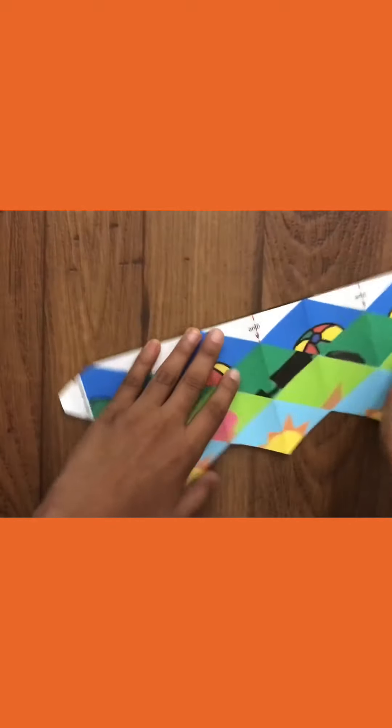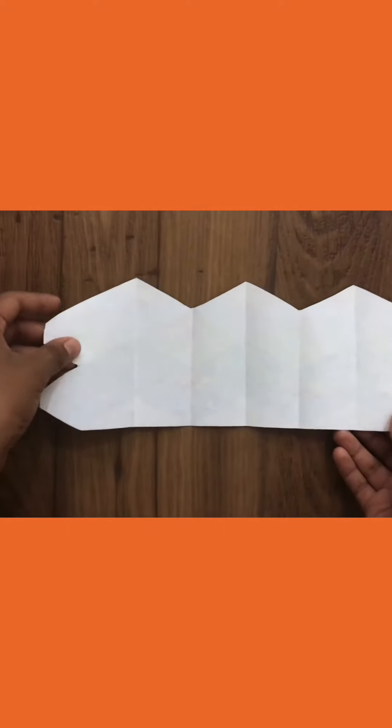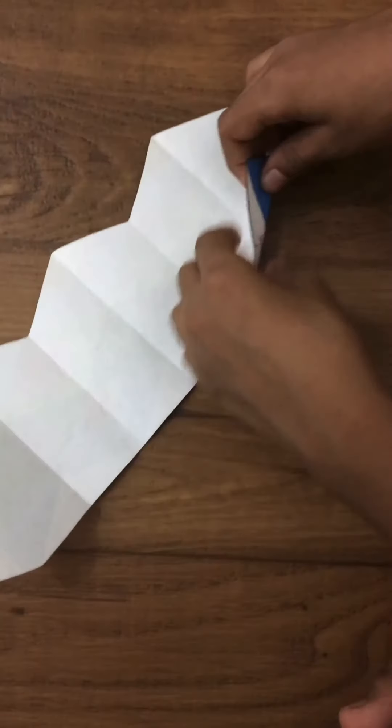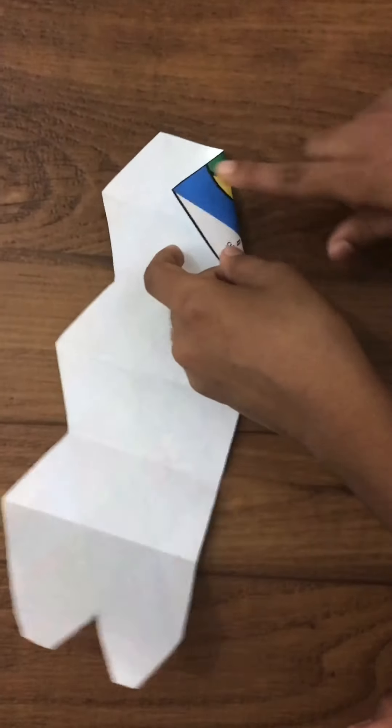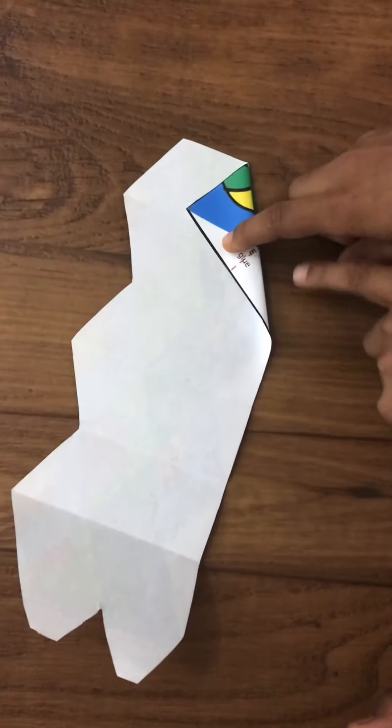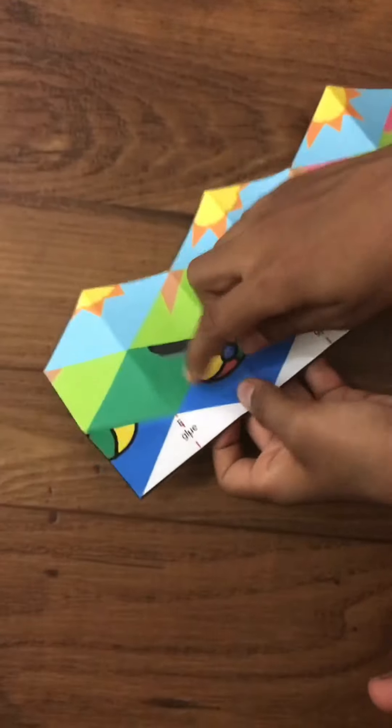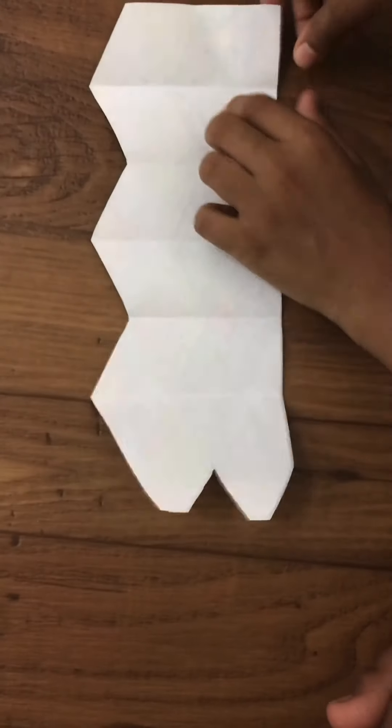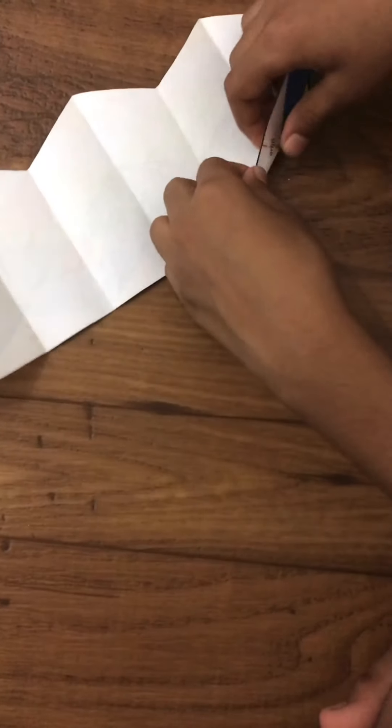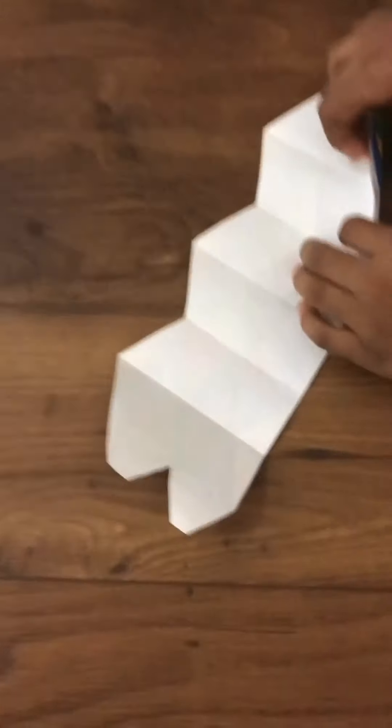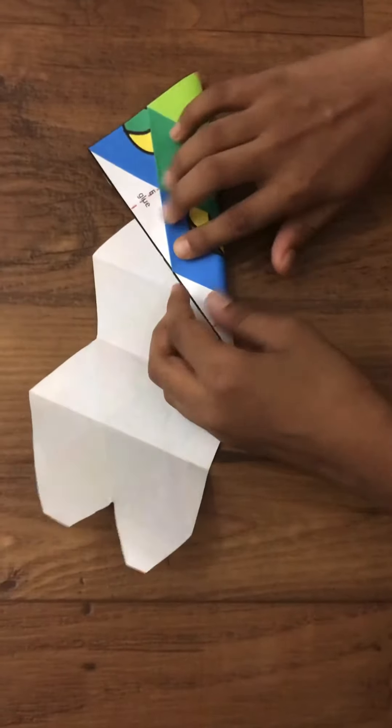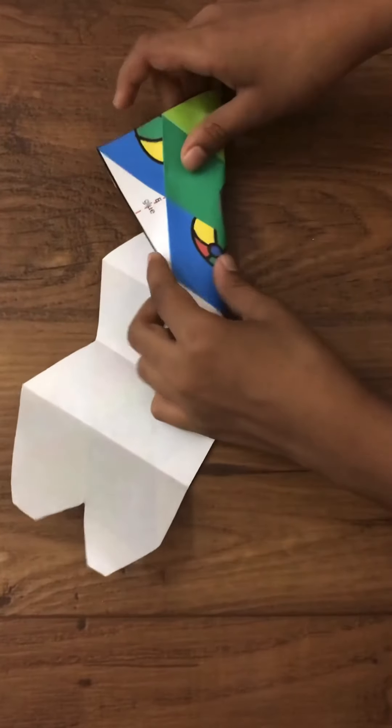Now we're going to have to flip it over again, and then we're going to have to fold on the diagonal lines. You see these diagonal lines? That's what we're going to have to fold. Just like that, and keep folding.